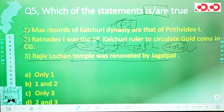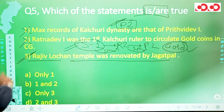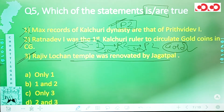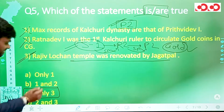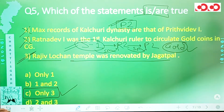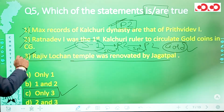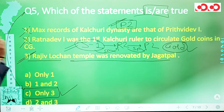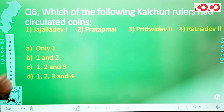Statement 3 says the Rajiv Luchan temple was renovated by Jagatpal — we have already seen this is correct from question 4. So only statement 3 is true. Option C, which says only statement 3 is correct, is the correct option for question 5.